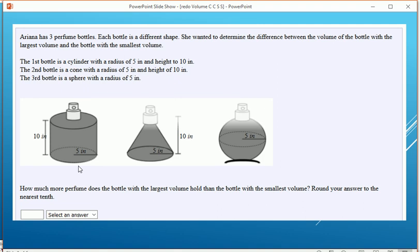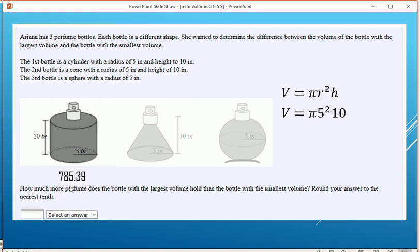We'll start off with the cylinder pi r squared h, where the radius is 5 and the height is 10. Going to the calculator, 785 and some change.